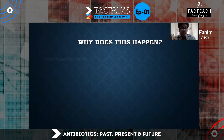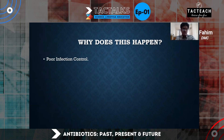So why does this happen? First and foremost: poor infection control. Prevention is always better than cure. If we don't prevent disease in the first place, we need antibiotics to treat it. More antibiotic use means more antibiotic exposure for bacteria, and therefore a higher probability of developing resistance.